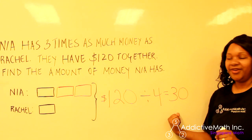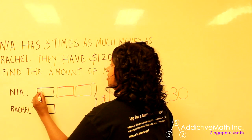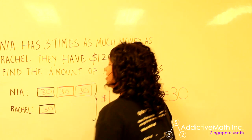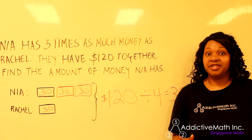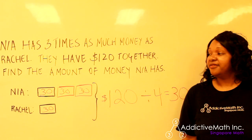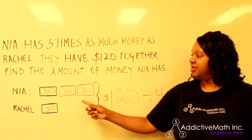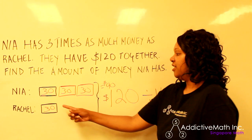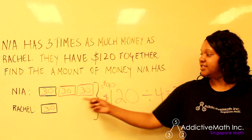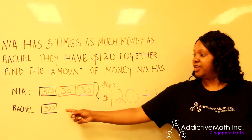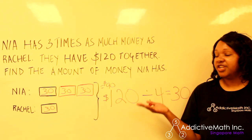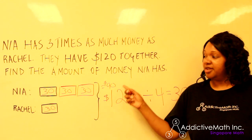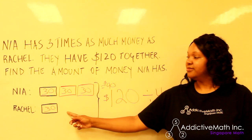That tells us each bar is worth 30, so let's fill it in: 30, 30, 30, 30, and 30. Now we can figure out how much money Nia and Rachel each have. 30 plus 30 plus 30 is 90, and then Rachel has 30. So Nia has $90 and Rachel has $30.